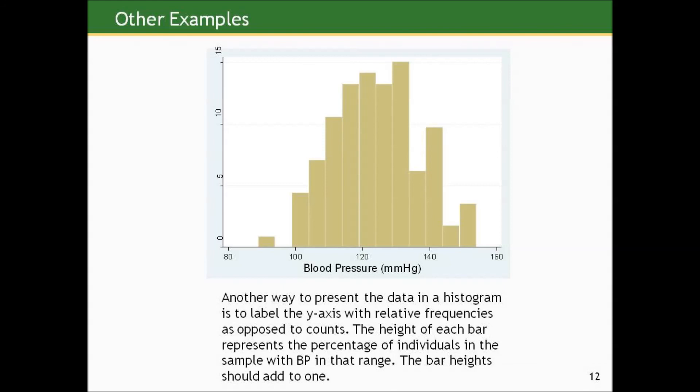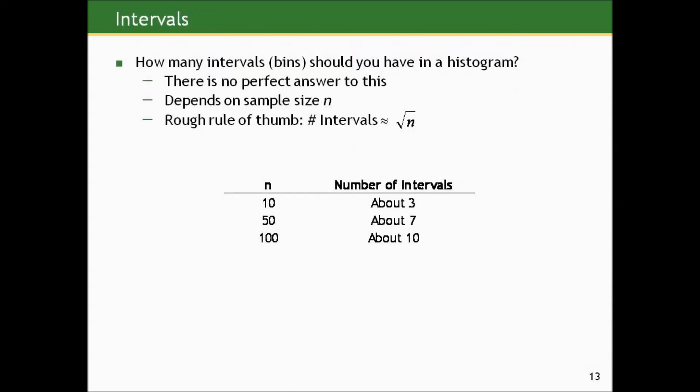So how many intervals should you have in a histogram? Well, there's no perfect answer to this. It really depends on the sample size and the actual spread in your data. A rule of thumb, if you're doing this by hand, which you never will be, is the number of intervals should be roughly equal to the square root of the sample size. So if you had 10 observations, you need about 3 bins. And you basically estimate the width of each bin by taking the data range and dividing by 3. 50 observations, about 7; 100, about 10. But unless you tell it otherwise, the computer will choose this optimal number of bins and set the bin width for you. And you can see some evidence of that in the optional section. Histograms are a nice way to present a picture of continuous data, but there are other options, which we'll explore in the next section.